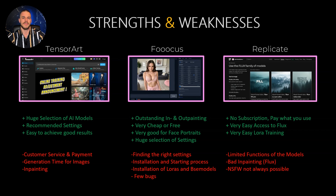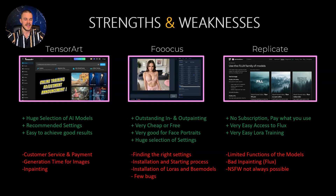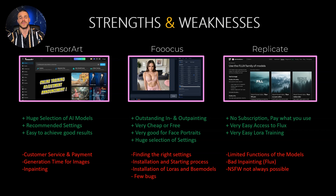The downside of Replicate is that when you access models like Flux, there is a little bit of a limitation regarding functions, at least for some models. Also the in-painting, especially when using Flux on Replicate, is really bad. Sometimes the creation of not-safe-for-work content is not possible because you can't shut off the NSFW checker — but that's exactly why I also use TensorArt, where it's totally possible to create not-safe-for-work content.